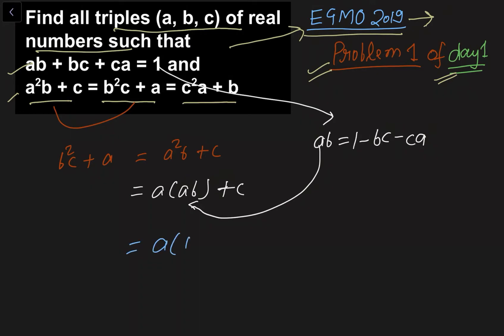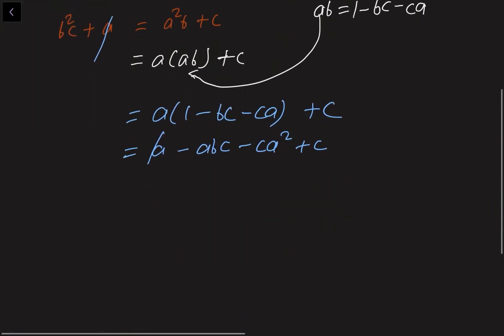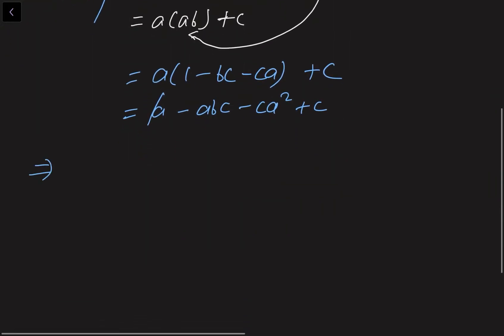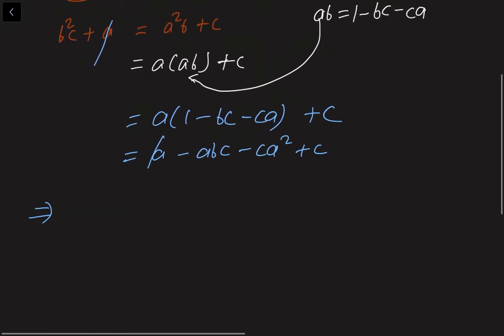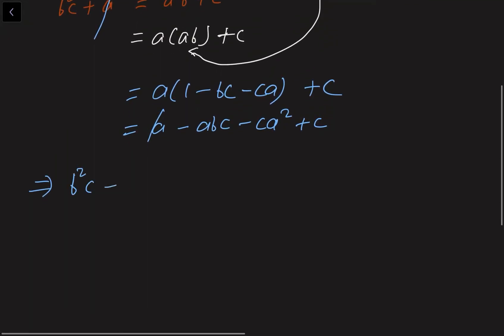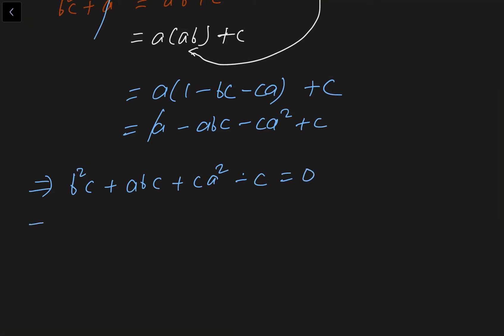Substituting, we get A·(1 − BC − CA + C), which expands to A − ABC − CA² + C. The A terms cancel, and moving everything to the left-hand side gives B²C + ABC + CA² − C = 0. Taking C common: C·(B² + AB + A² − 1) = 0.